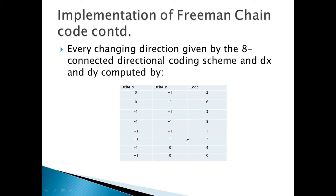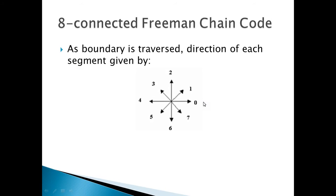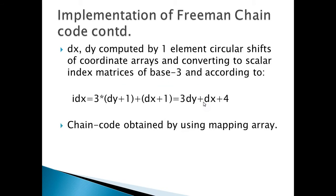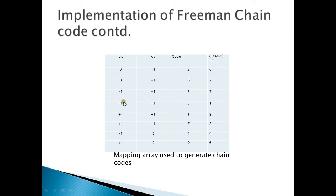Now let us come to the implementation part of the Freeman chain code. For every changing direction in the path of the next pixel with respect to the current pixel, the values of dx and dy can be given by this coding scheme, which is obtained from the direction-to-code directional scheme discussed earlier. The delta x and delta y are computed by circular shifts of the coordinate arrays by one element. The dx, dy pairs are converted into scalar index matrices of base 3 in accordance with this expression, and then the chain code is obtained by using this mapping array coding scheme.